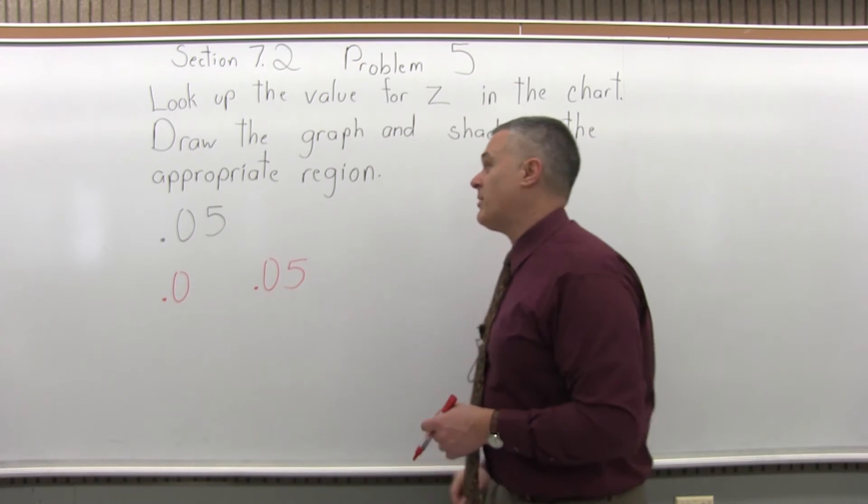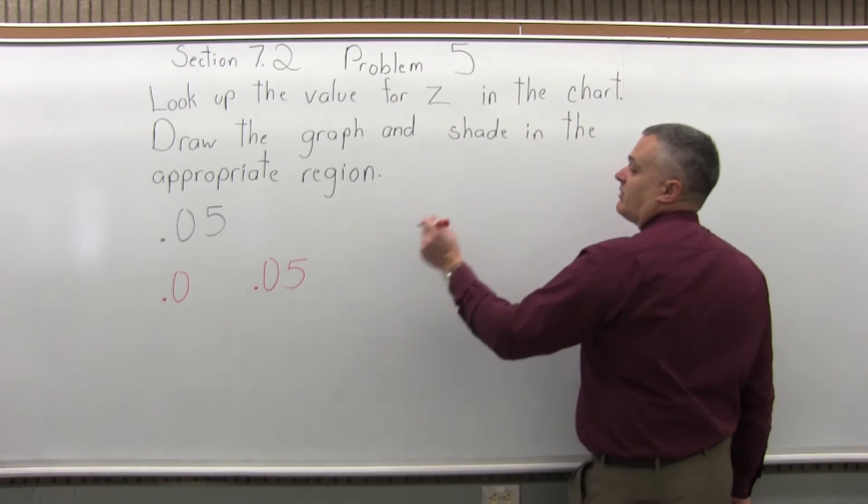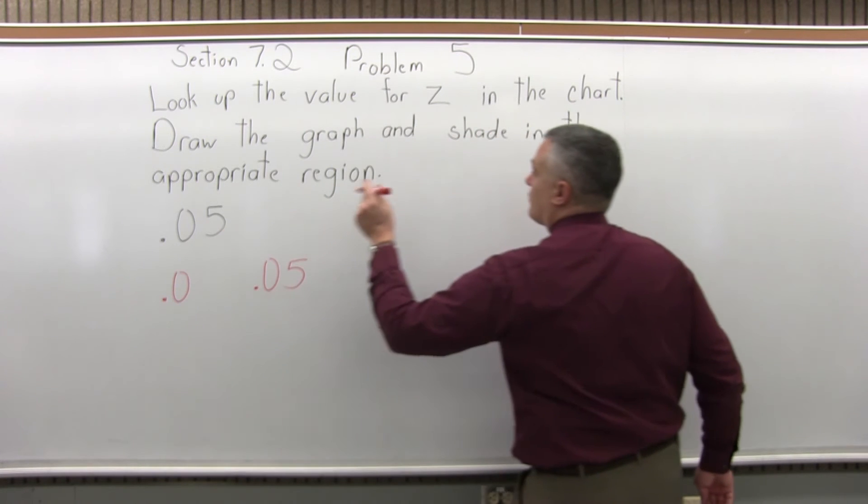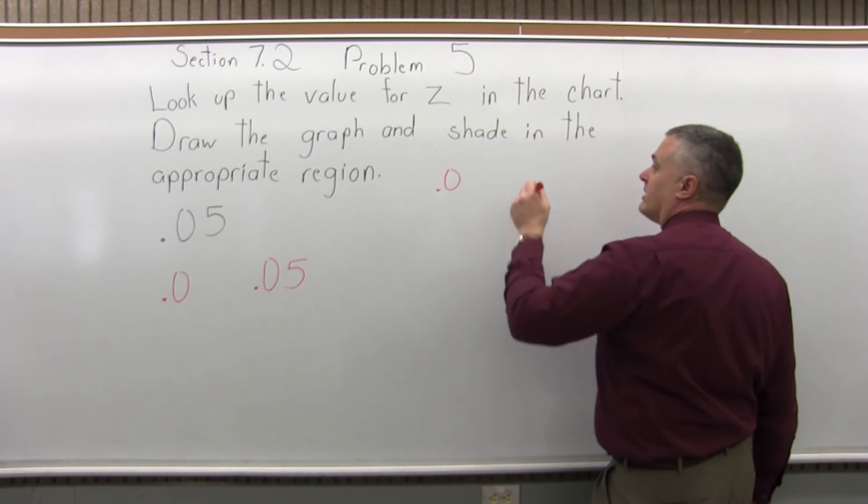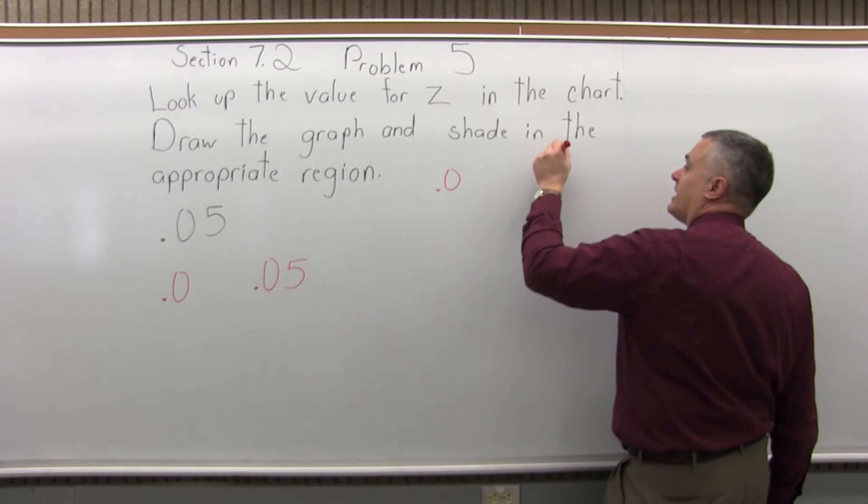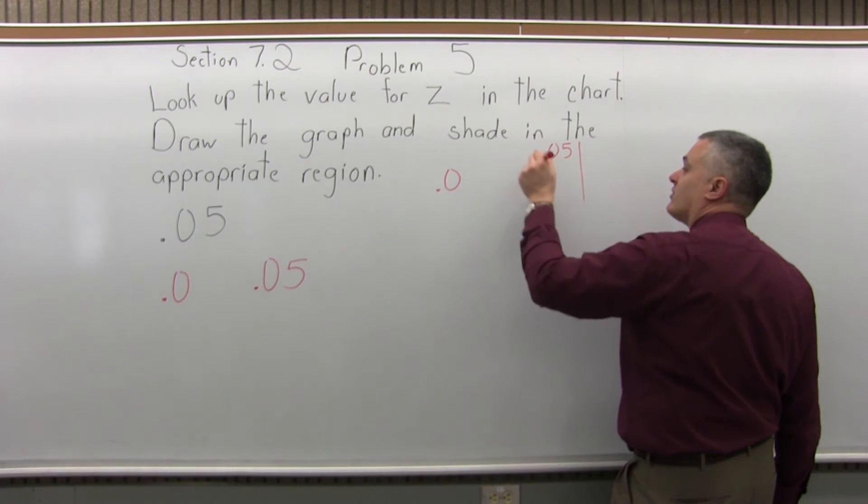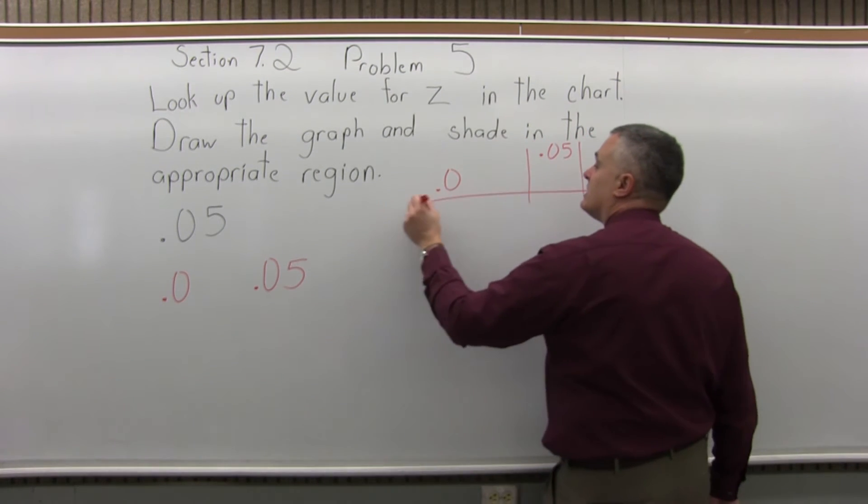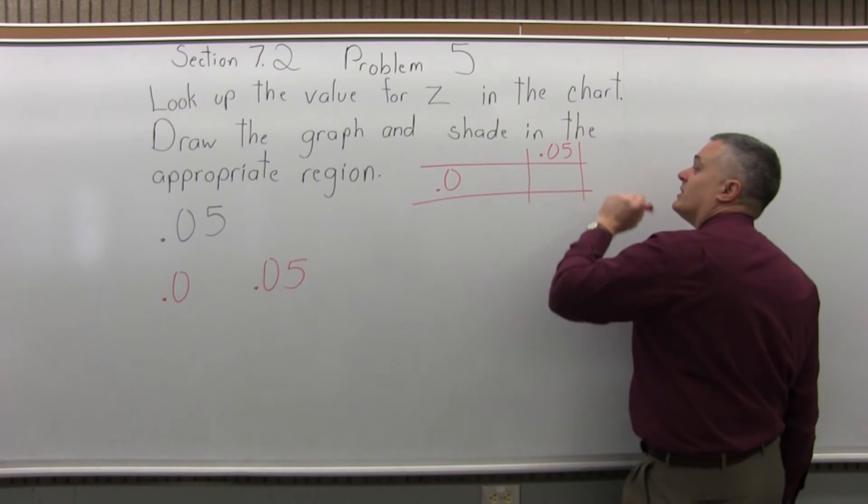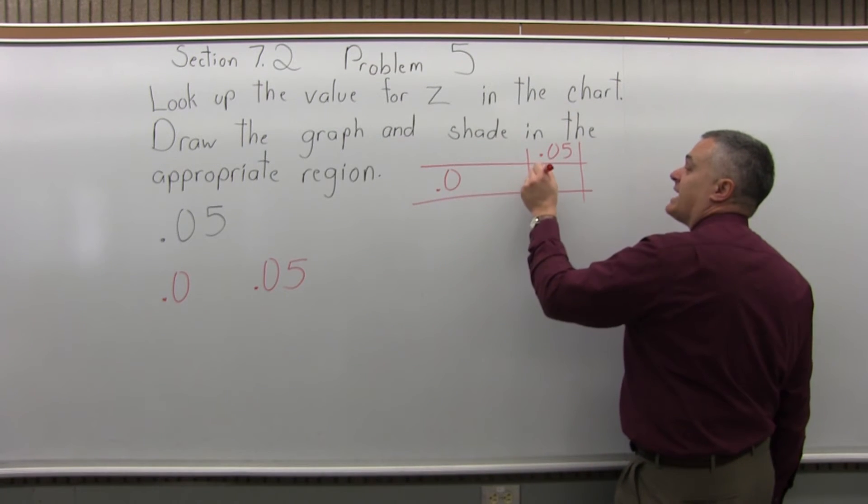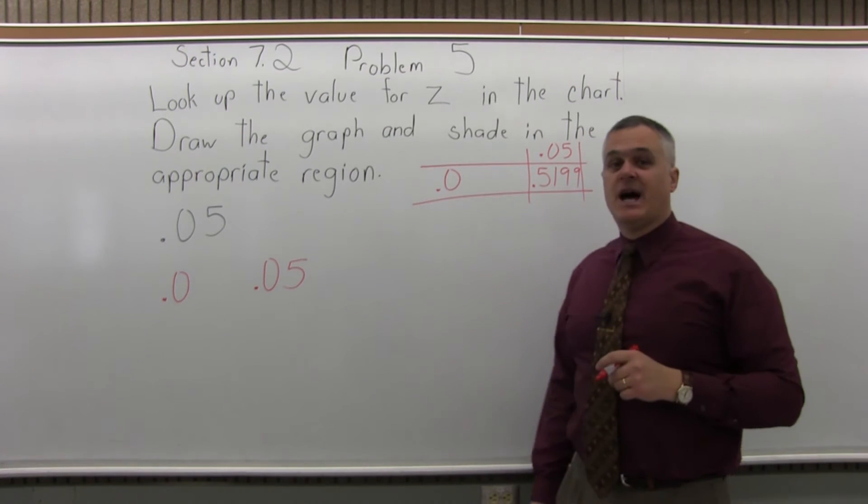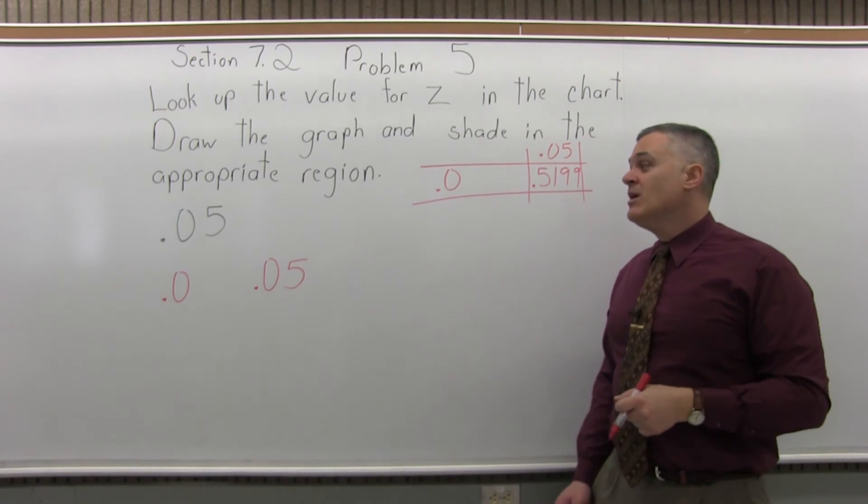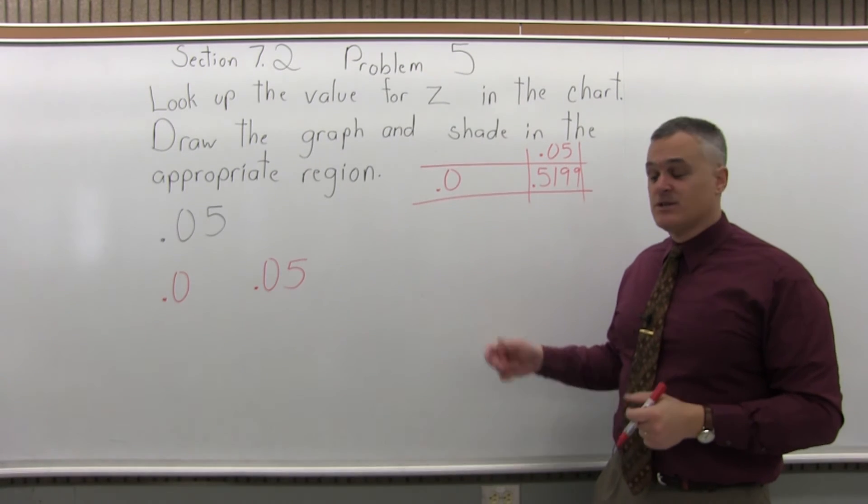So, the .0 row of the positive page of the chart is the very top row and you are going to look across about half way until you see the .05 column. And you will see where the .0 row and the .05 column intersect and you will see they intersect at .5199. That's the answer. But it's good to understand what that answer means.